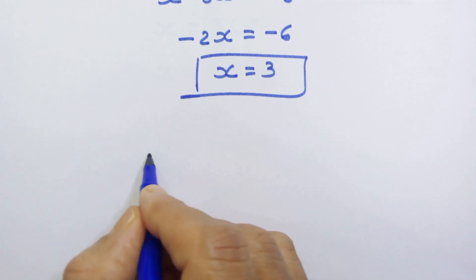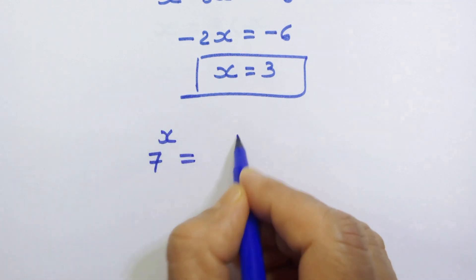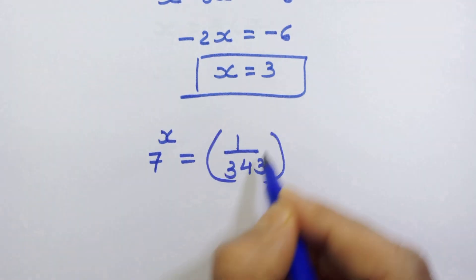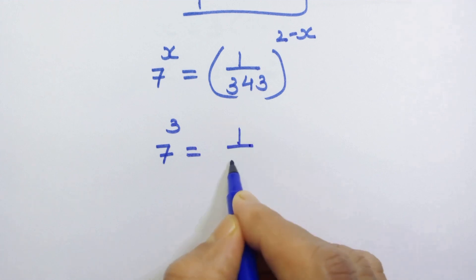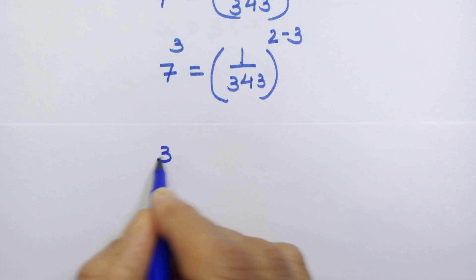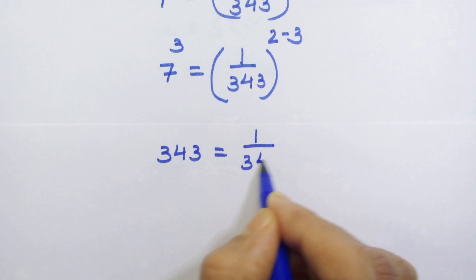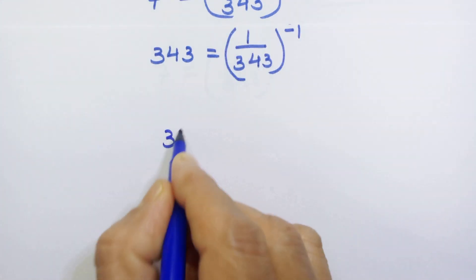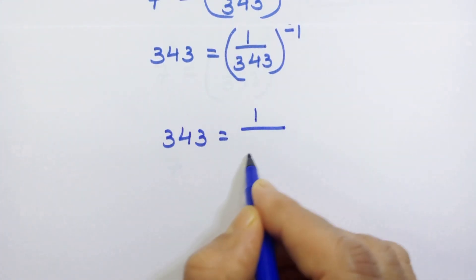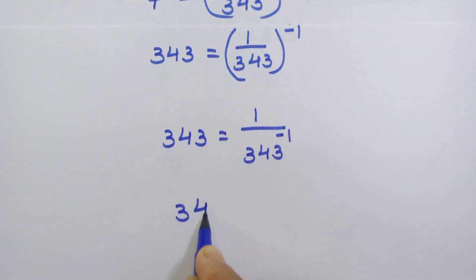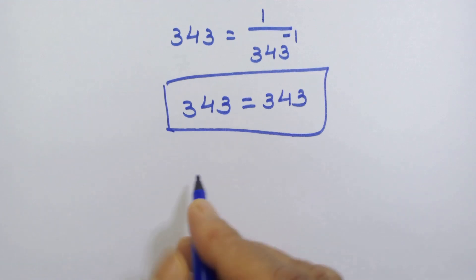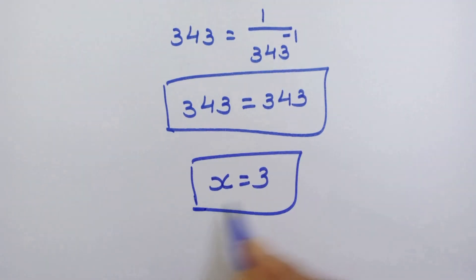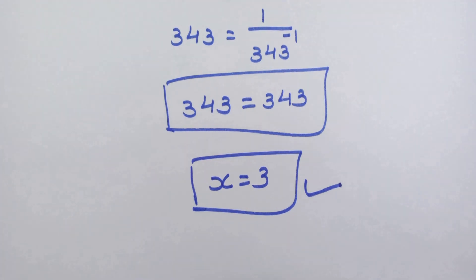Now let's verify this value in our main equation: 7 raised to x is equal to 1 upon 343, whole raised to (2 minus x). Substituting x equals 3 confirms the answer. So x is equal to 3 is the right answer. Thanks for watching, see you in the next one, bye!